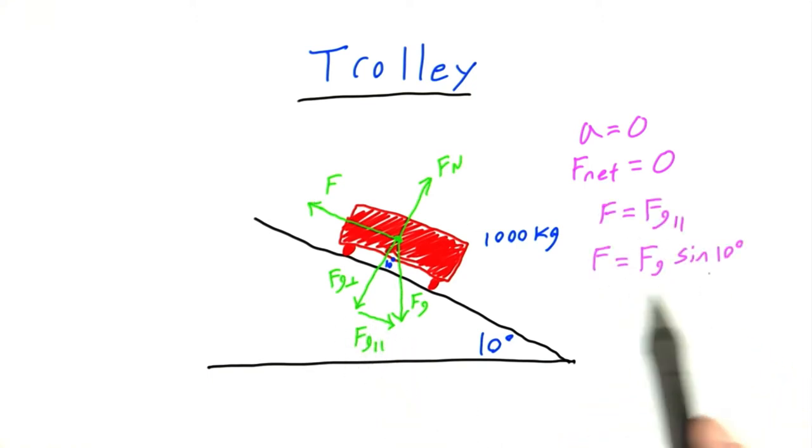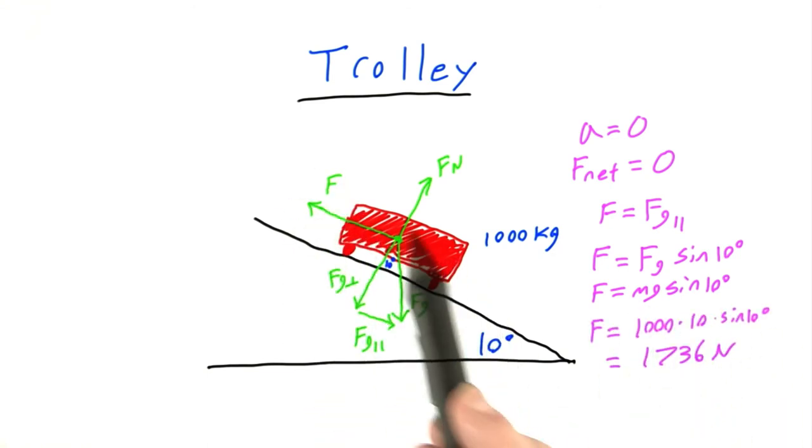That gives us this equation here. Now using some trigonometry, I know that F is equal to the full force of gravity times the sine of 10 degrees. And of course, the force of gravity is just equal to mg. And plugging in numbers here, I find that the force F required to keep the trolley moving at a constant velocity is equal to 1736 newtons.